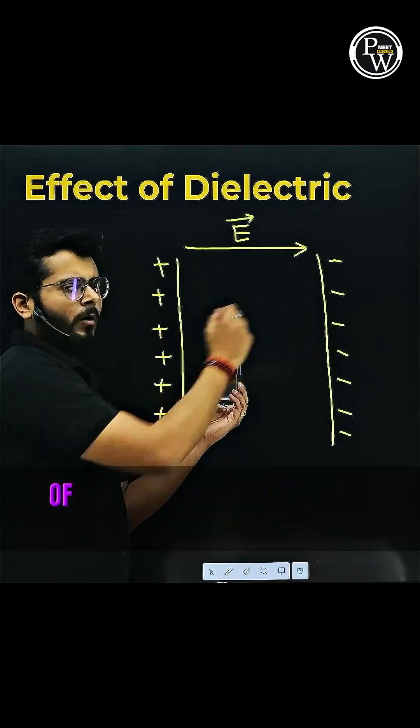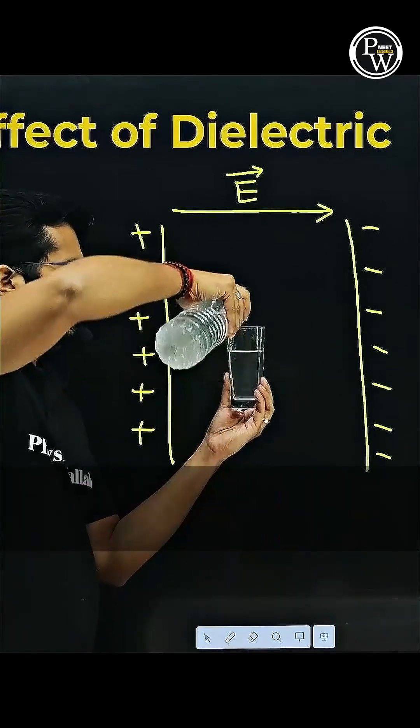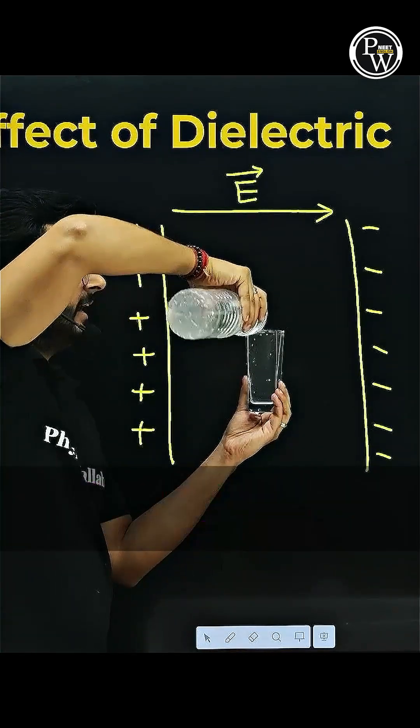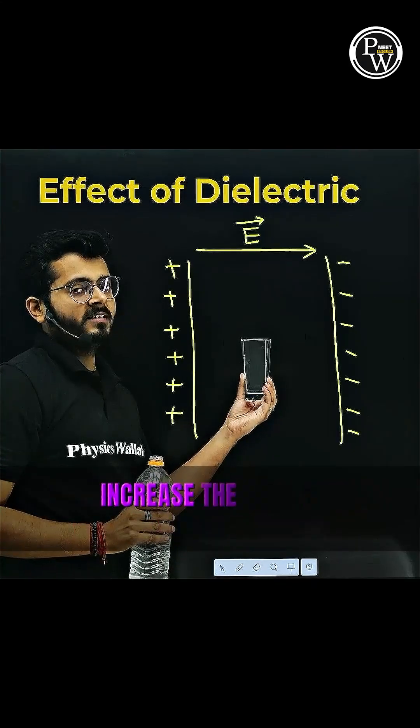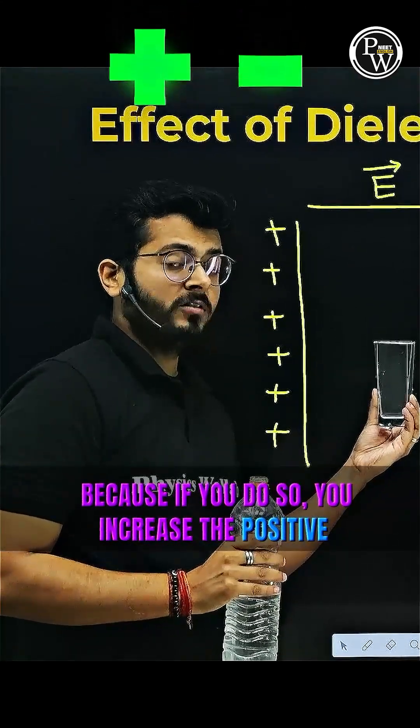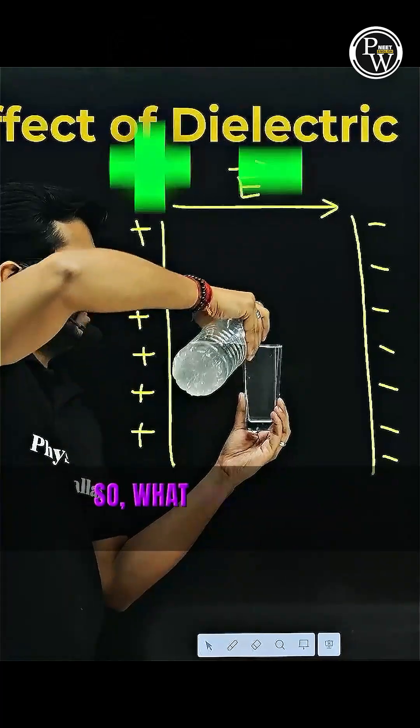You see that if you increase the amount of charge stored on the plate, what will happen? The electric field between the plates will increase and then there will be a point beyond which you cannot increase the electric field in the medium. Because if you do so, you increase the positive and negative charges on the plates. So what will happen?